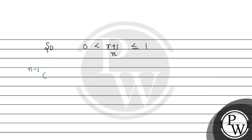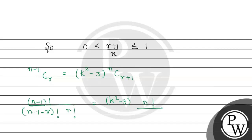So here we have n-1Cr equal to k squared minus 3 times nCr+1. We can write the left side as: (n-1)! upon (n-1-r)! times r!. This equals k squared minus 3, times n! upon (r+1)! times (n-r-1)!.